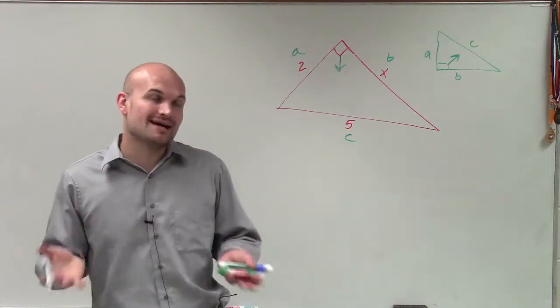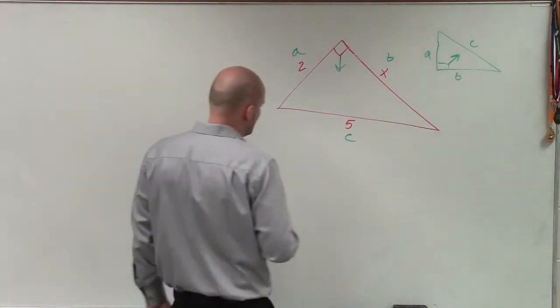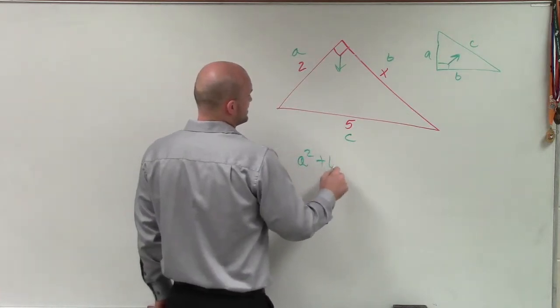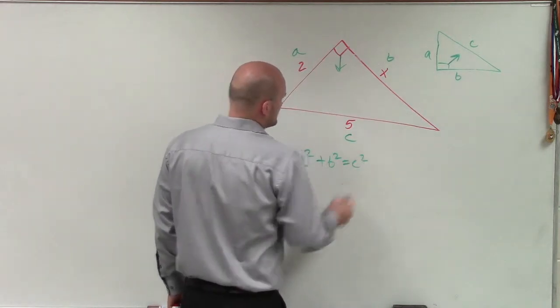Now, by applying the Pythagorean theorem, the Pythagorean theorem states A squared plus B squared equals C squared.